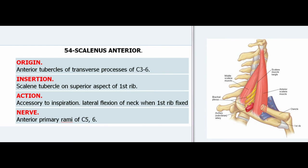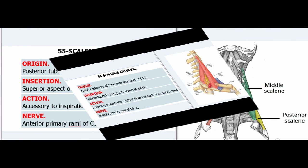54. Scalenus Anterior. Origin: Anterior tubercles of transverse processes of C3–6. Insertion: Scalene tubercle on superior aspect of first rib. Action: Accessory to inspiration; lateral flexion of neck when first rib is fixed. Nerve: Anterior primary rami of C5–6.